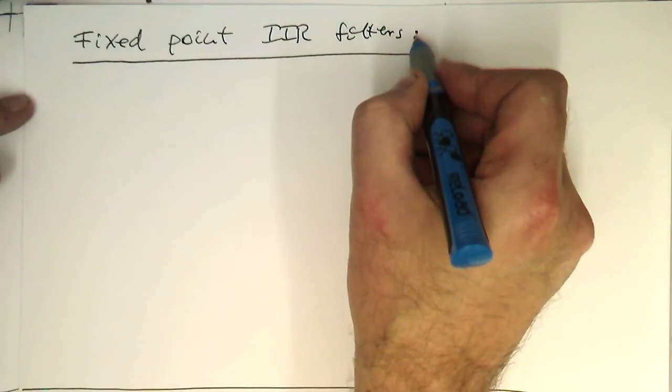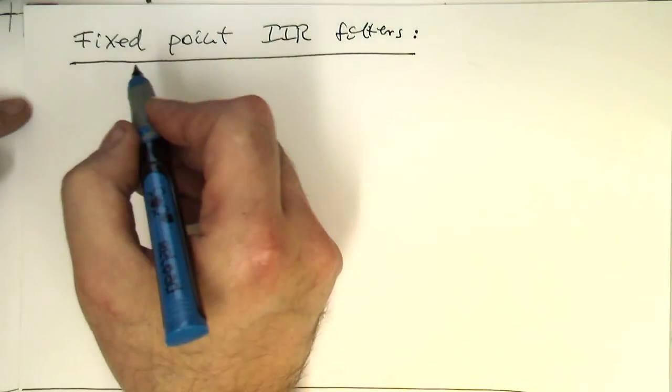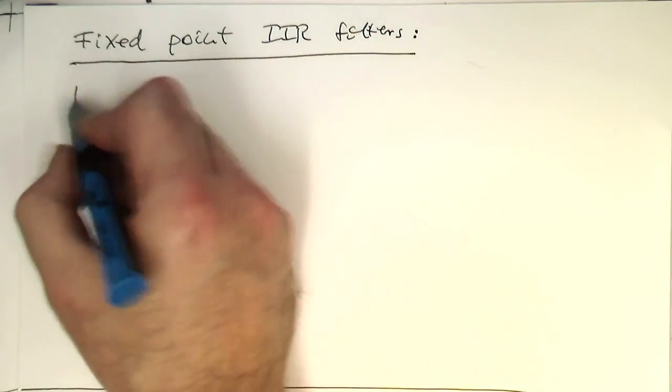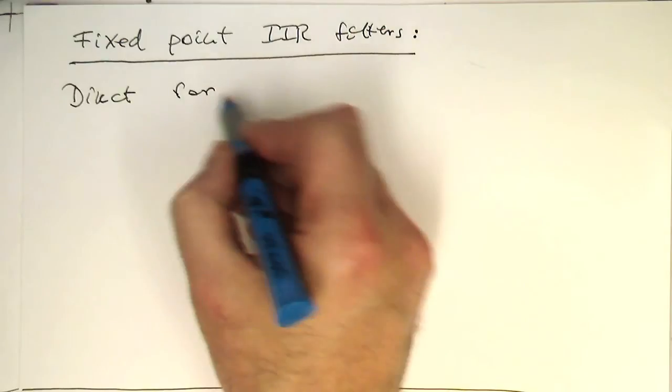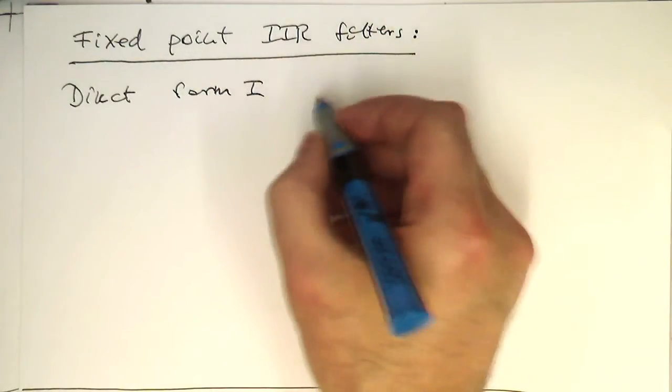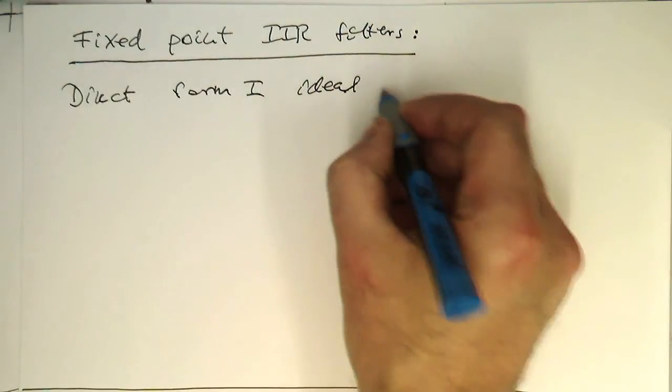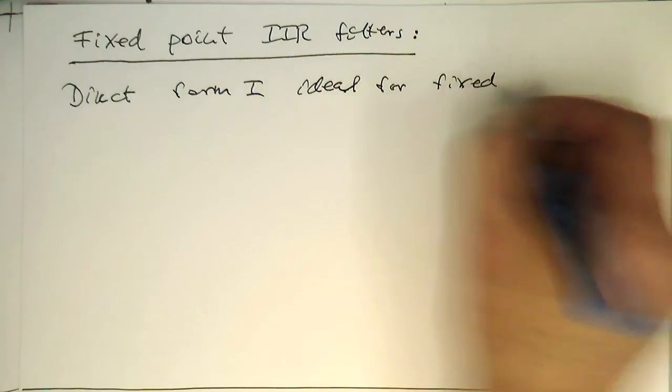This means that the building blocks, everything, is just represented by integer. And so especially the direct form I is ideal for fixed point.